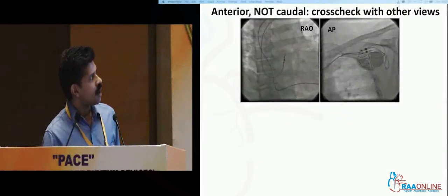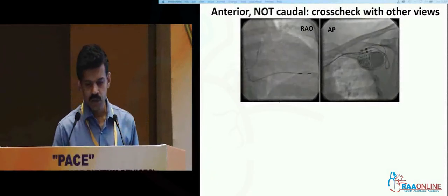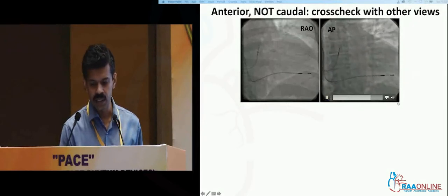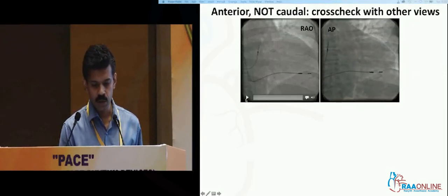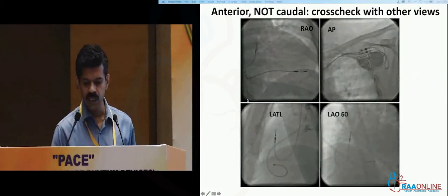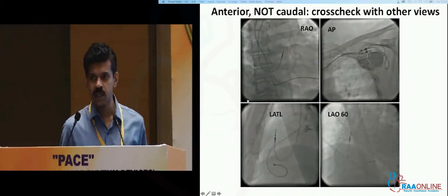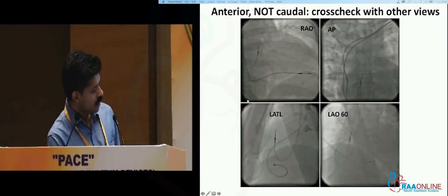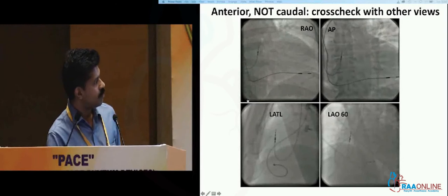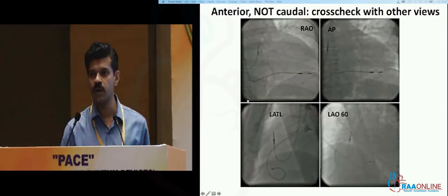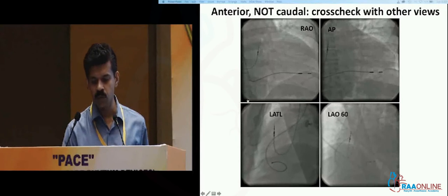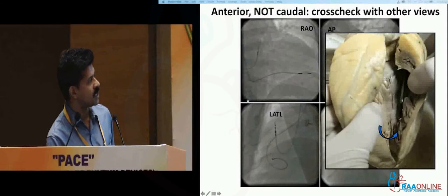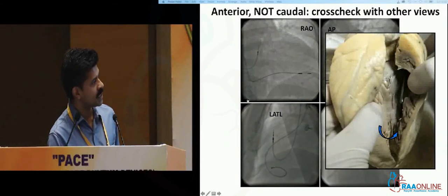Whenever a lead is anterior but not caudal, please cross-check with other views. This is a lead that was left anterior, but you can see it has not gone caudal. This is the AP view and this is the right anterior oblique view, but once we get to the other views, you see it is nowhere near the apex. So if you get a lead that has gone anterior but not going caudal — not going down and crossing under the diaphragm — please make sure you check the other views. This lead is absolutely nowhere near the apex; it's far worse than what the RAO and the AP view suggest. It was going down towards the apex somewhere, but it ended up misplaced.